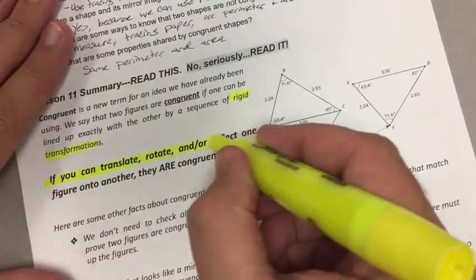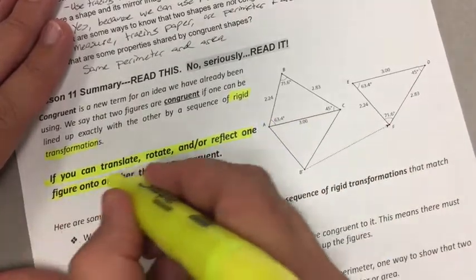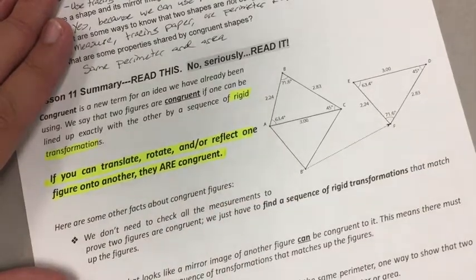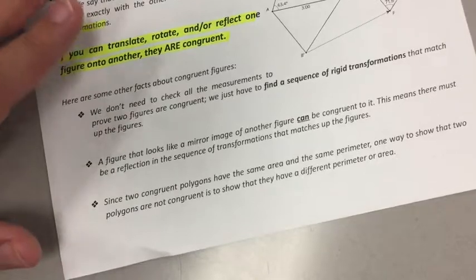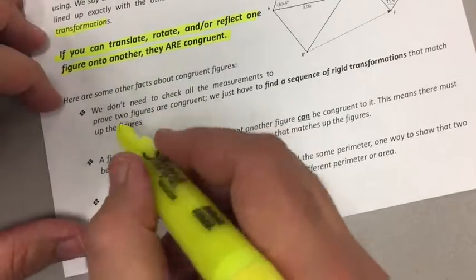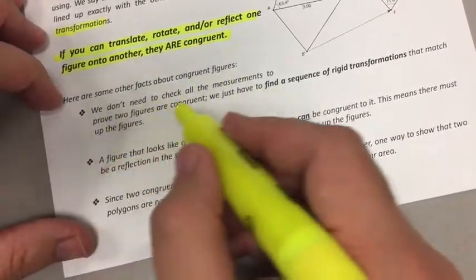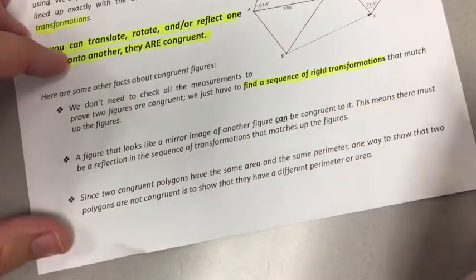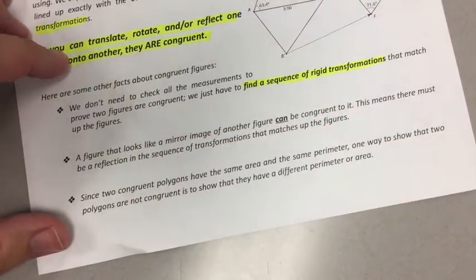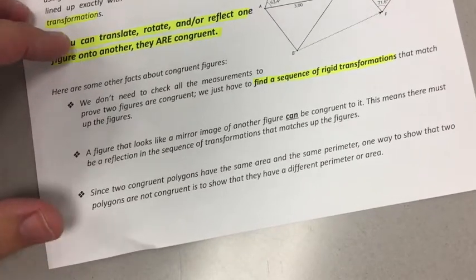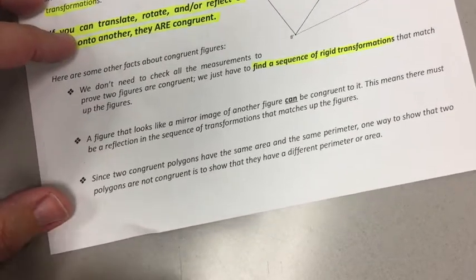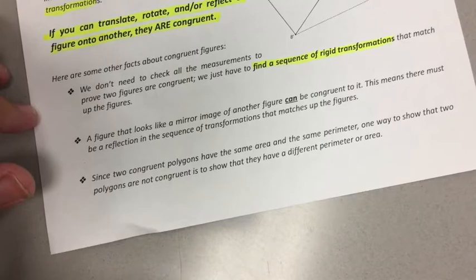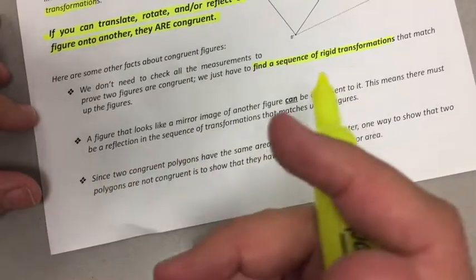Here's the big idea: if you can translate, rotate, and/or reflect one figure onto another, they are congruent. Here's some other facts about congruent figures - we don't need to check all the measurements. We just have to find a sequence of transformations, rigid transformations, that match and line them up. So we don't have to get out our rulers and measure everything.